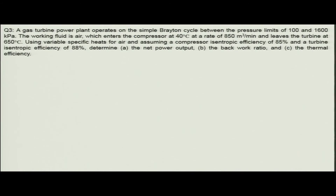Now we move to the next problem about a simple Brayton cycle where we will learn the concept of compressor and turbine isentropic efficiency. So far we have seen ideal cycles where compression and expansion are isentropic, but here we will see an actual cycle incorporating compressor and turbine isentropic efficiencies.